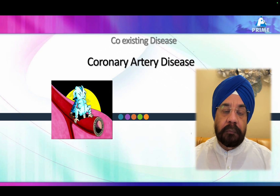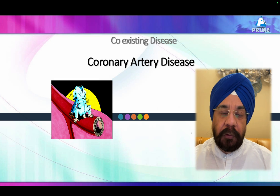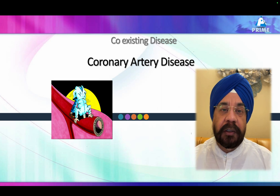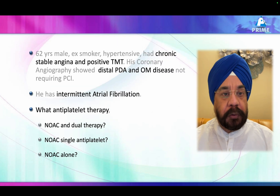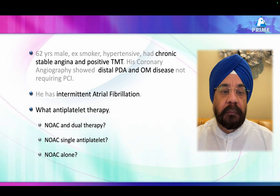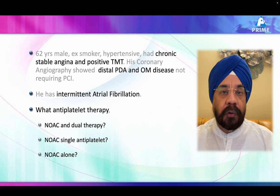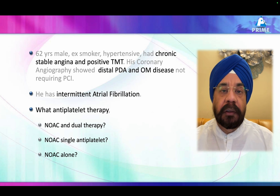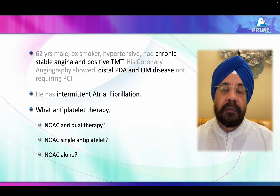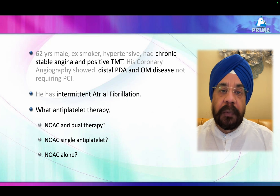Coronary artery disease: there are a lot of errors in this area. Let me present a case. A young male bank employee, ex-smoker (stopped two years ago), hypertensive, with a history of chronic stable angina for the last two to three years and a positive TMT. He got an angiogram done which did not show coronary artery disease significant enough to require angioplasty or stenting.